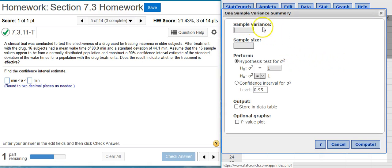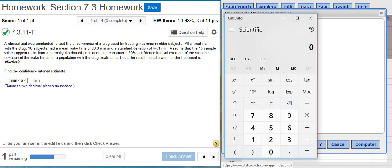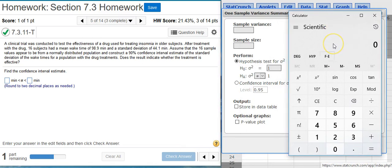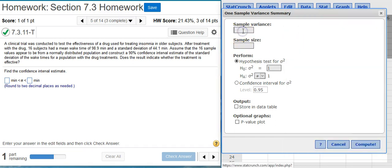Here in my options window, it asks me for the sample variance. Notice we're not given the variance directly in the problem statement, but we are given the standard deviation, 44.1. So I can get the variance from the standard deviation. The variance is the square of the standard deviation. So in my calculator, I'm going to put 44.1, that's the standard deviation. I'm going to square it. And now this value here is the variance. If I copy and paste that here using Ctrl-V on my keyboard, that's the variance.